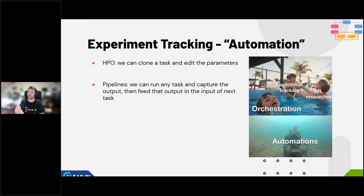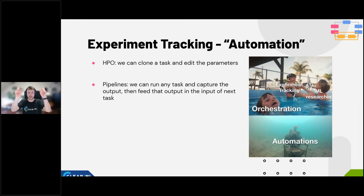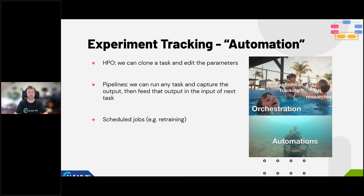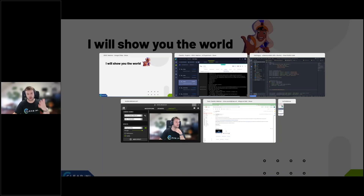There's also automation: the HPO app clones a task, changes hyperparameters, watches scalars, and treats your code as a black box — just inputs and outputs — scheduling runs in the queues for you. You can run pipelines by chaining different experiments. You can also schedule jobs, set triggers and schedulers. ClearML is essentially a toolbox full of tools: queues, workers, experiment manager, data versioning system, and more.